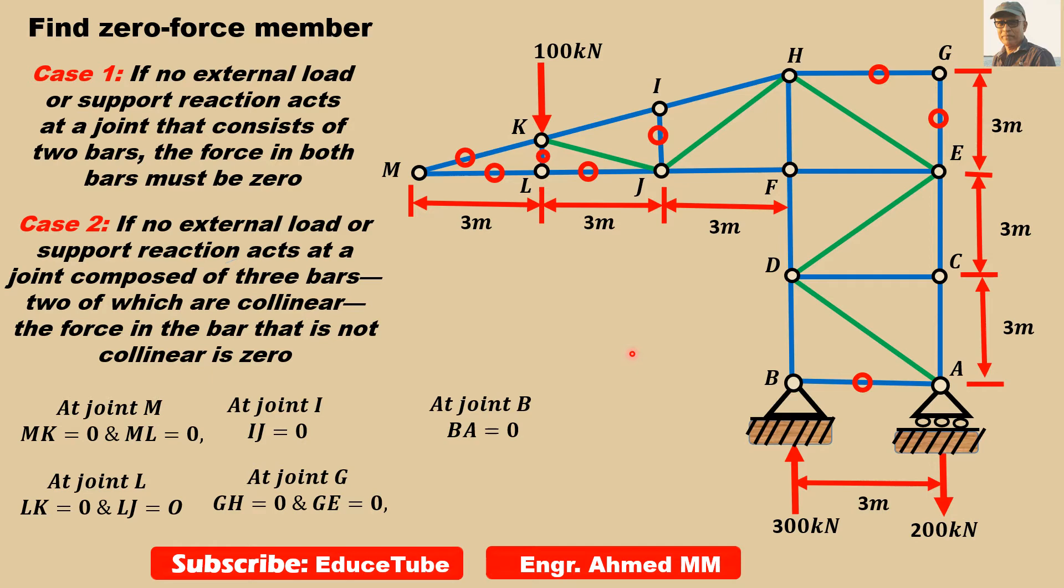Now let's move to joint A. At joint A, if we take the horizontal component of AD, the horizontal component will be through AB. And horizontal component, there is no horizontal load on the truss, so the horizontal component of AD will also be zero.